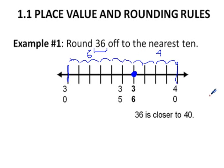Clearly it's closer to 40 and so we would say 36 rounds to 40. If you had to pick between 30 and 40, 40 is the number you would select.